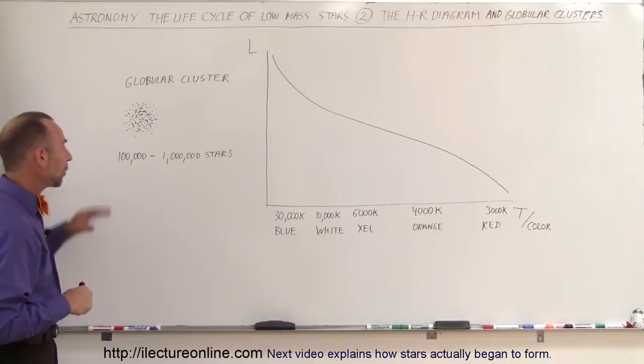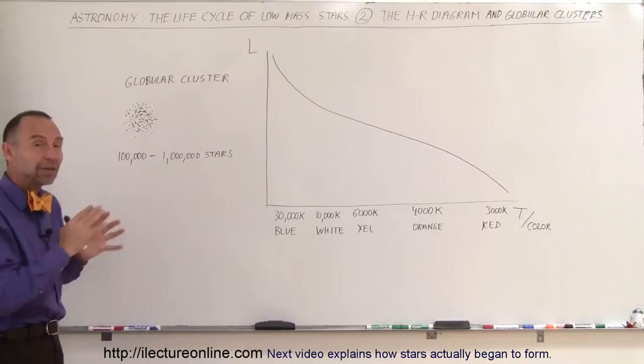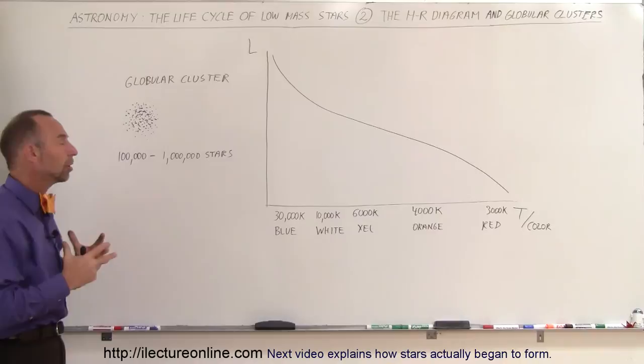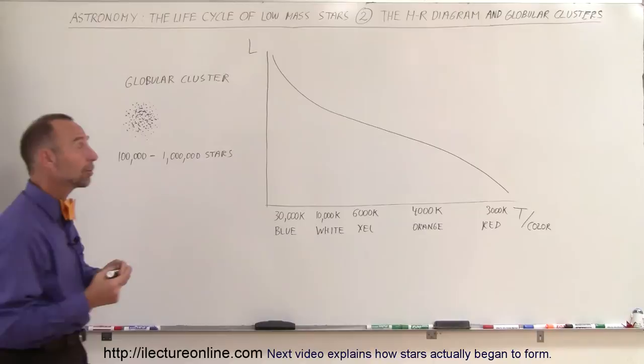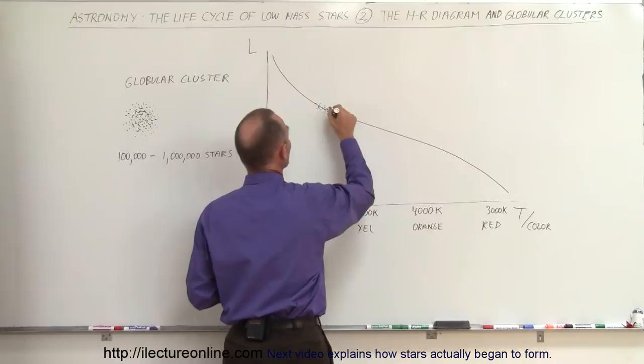What's unique about these globular clusters is that pretty well all the stars formed at about the same time. They all were born around the same time from the same huge cloud of dust and gas. When we took those stars and placed them on the HR diagram, we saw something as follows.